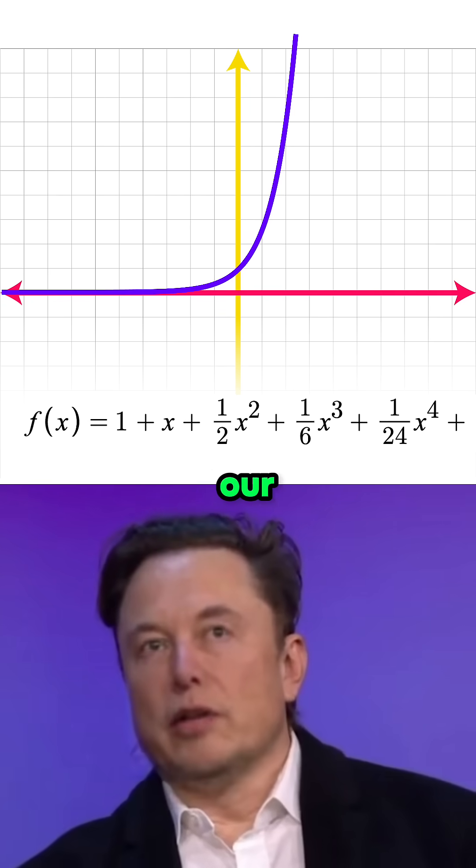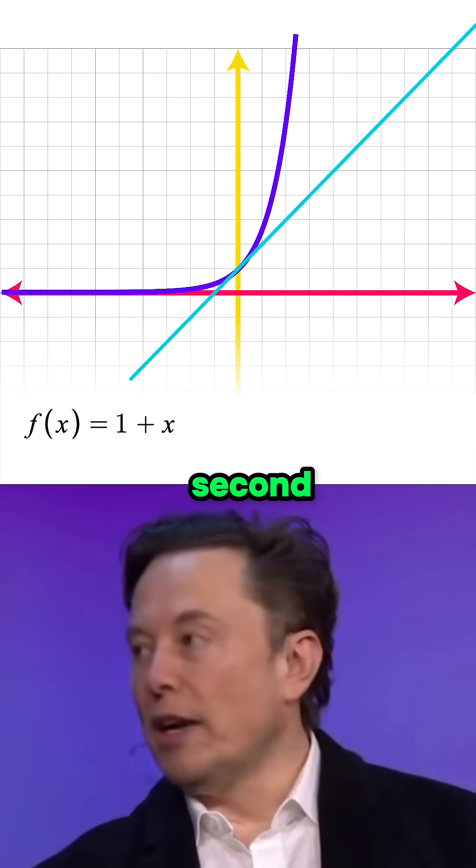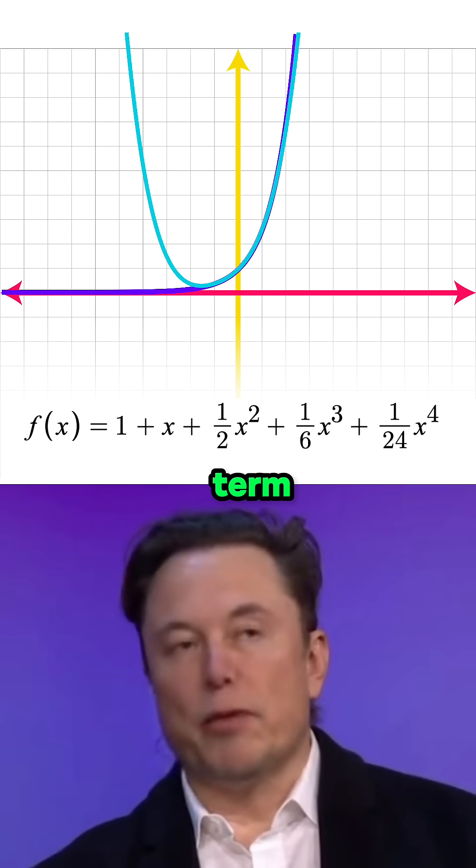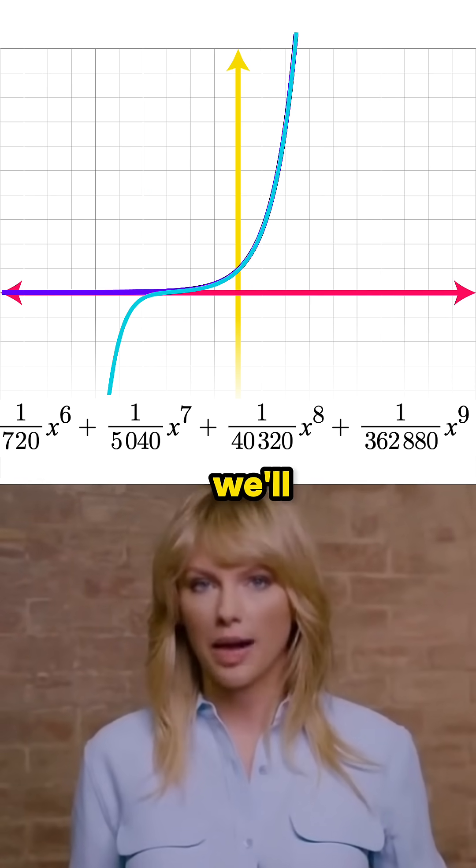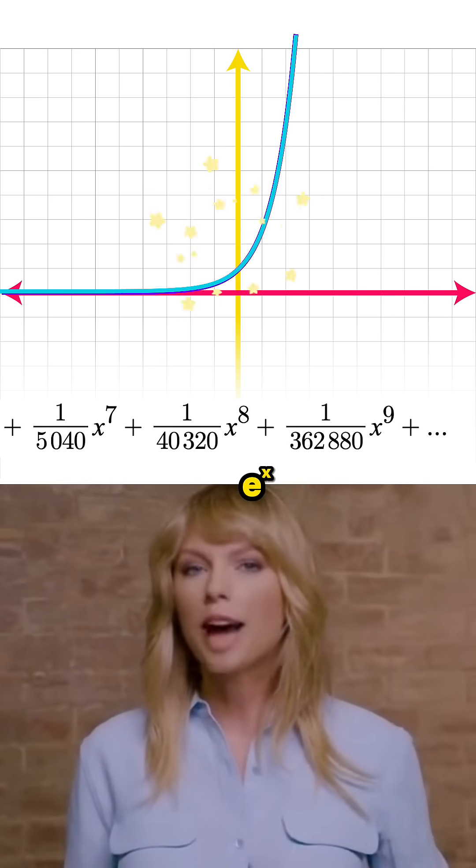Okay, now check this out. Here's our Taylor series with the first term, second term, third term, fourth term, fifth term. And if we keep adding these terms forever, eventually we'll end up fully recreating e to the x.